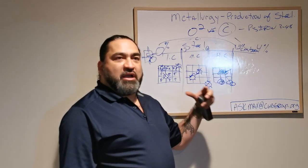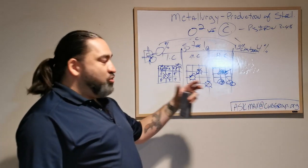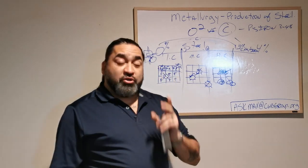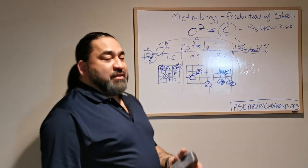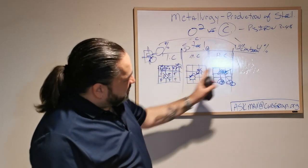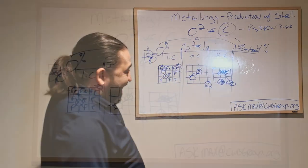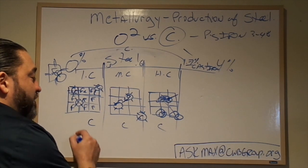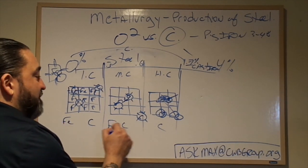High carbon steel has a purpose and it's good hard steel, but you've got to know what that purpose is and what you're going to do with it. This entire spectrum — everything from 0% to 1.7% — is still carbon and iron. Now, what changes once we get past 1.7%?